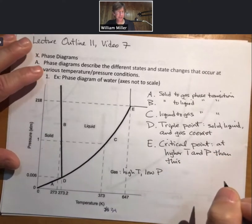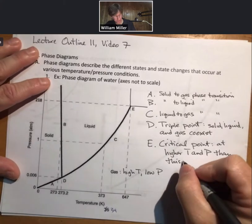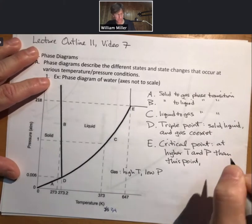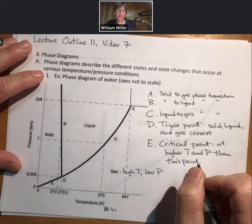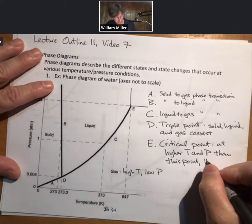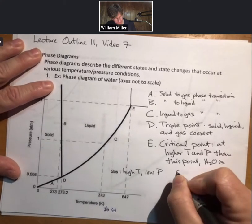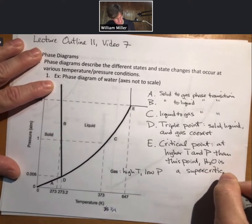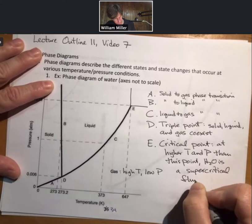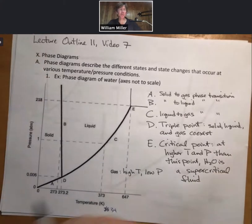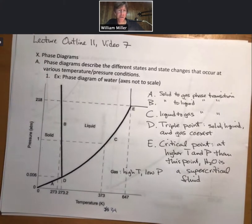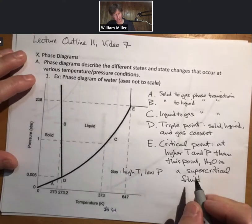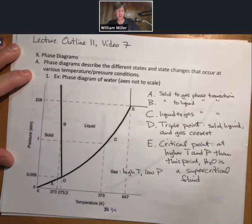At higher temperatures and pressures than this point, H2O is what's called a supercritical fluid. Supercritical fluid is not too important to us right now. It's good to know that they exist, they are useful in certain circumstances, but we need to know all five of these points.